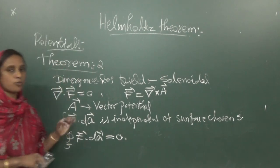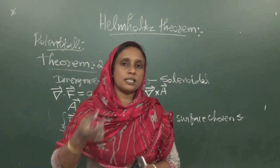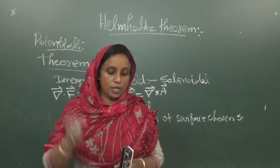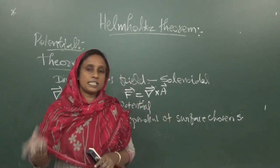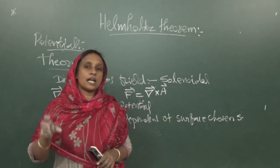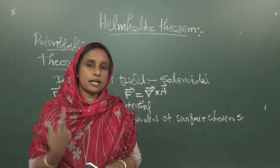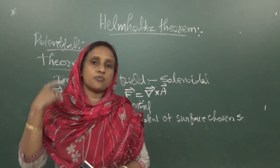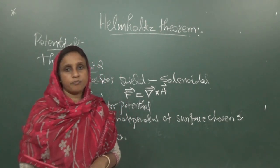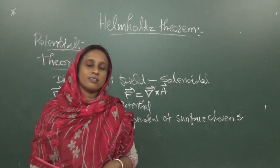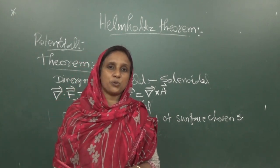We can conclude that Helmholtz's theorem states that you can uniquely specify a vector field if you know its divergence and curl, along with the boundary condition that the field vanishes at infinity. These are all the key points about Helmholtz's theorem.